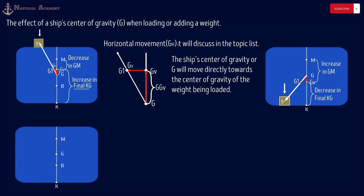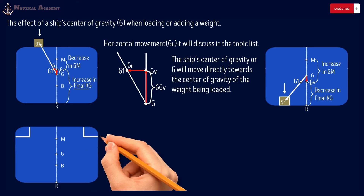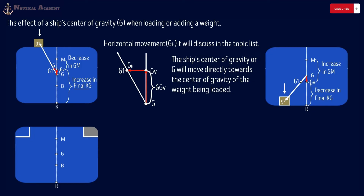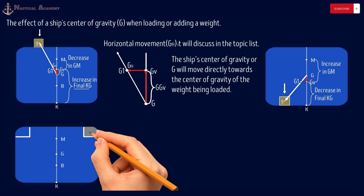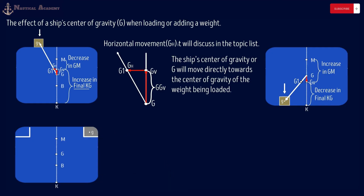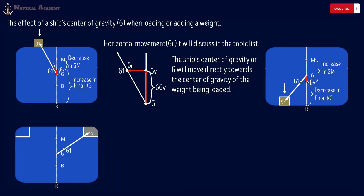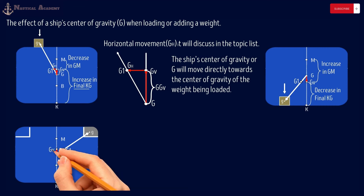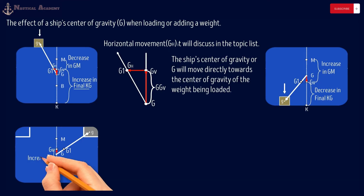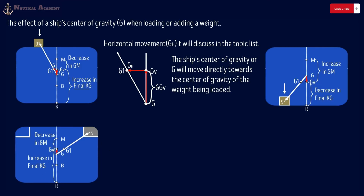The next scenario is filling in or pumping in ballast water in the ship's wing tank. We assume the tank's center of gravity when full of ballast water is here, marked as small g. The ship's center of gravity will move directly towards the center of gravity of the weight being loaded. The new G is marked as G1, and the vertical shift is marked as GV. The effect will be an increase in KG and a decrease in initial metacentric height GM. To find the KG or VCG of the weight inside the tank, you can refer to the ship's sounding table.